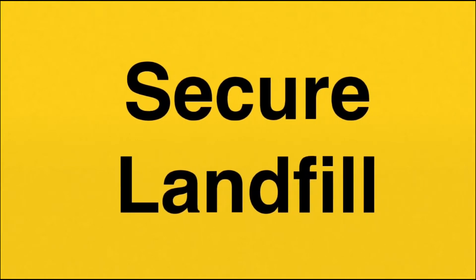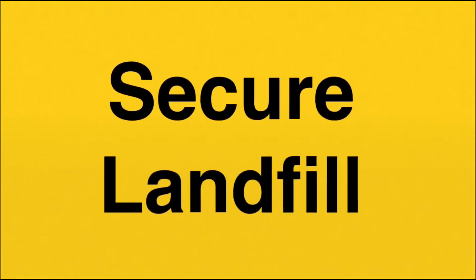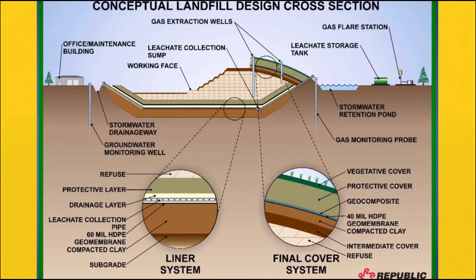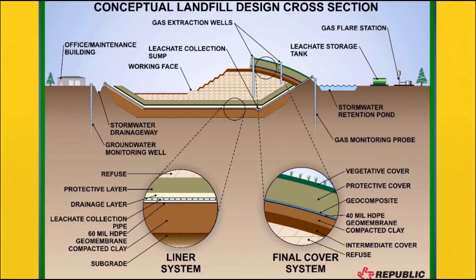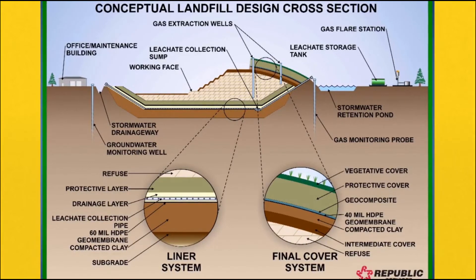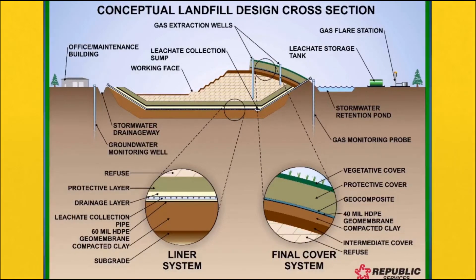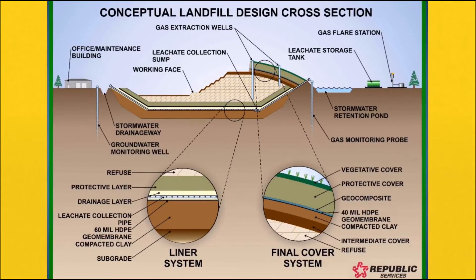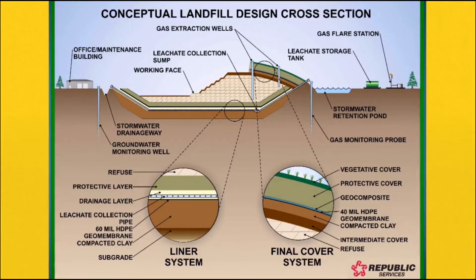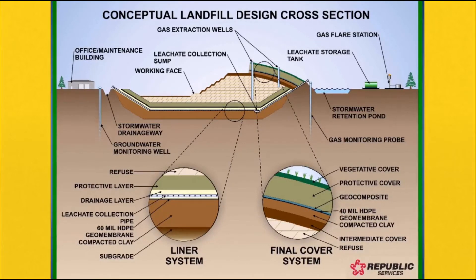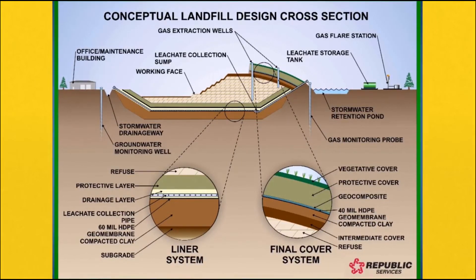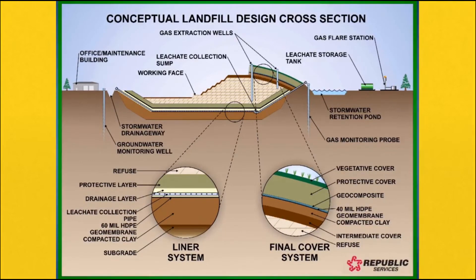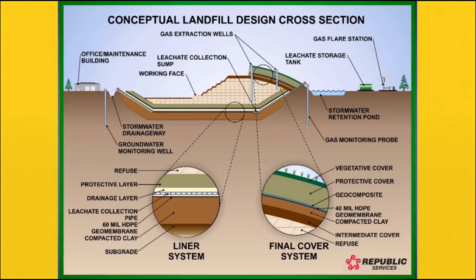Hazardous wastes must be stored in a different type of facility called a secure landfill, which has a few more features to ensure leachate does not enter the groundwater. It also has a clay liner, but on top of that it also has a plastic liner. There is also a drainage layer to take the leachate away to be further treated, and finally, there are groundwater monitoring wells to ensure that the groundwater is not contaminated.